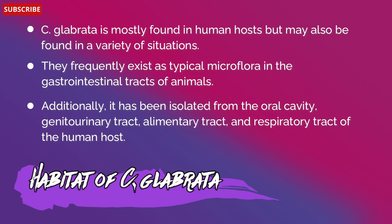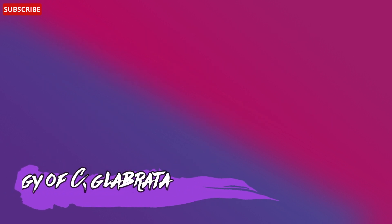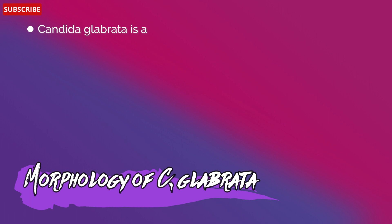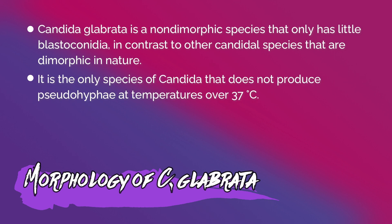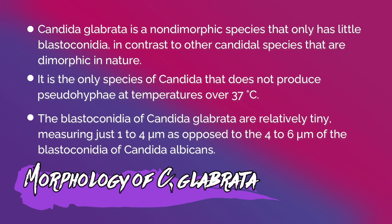Regarding the morphology of Candida glabrata, it is a non-dimorphic species that only has blastoconidia. In contrast to other Candida species that are dimorphic in nature, it is the only species of Candida that does not produce pseudohyphae at temperatures over 37 degrees Celsius. The blastoconidia of Candida glabrata are relatively tiny, measuring just 1 to 4 micrometers.